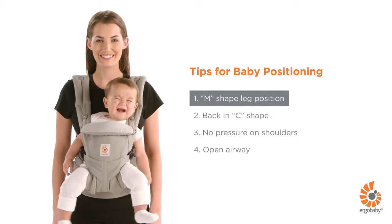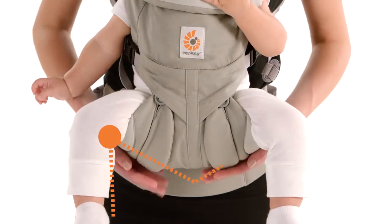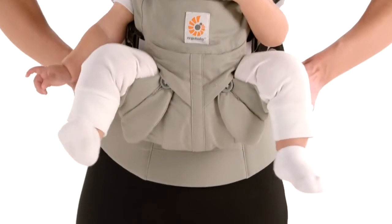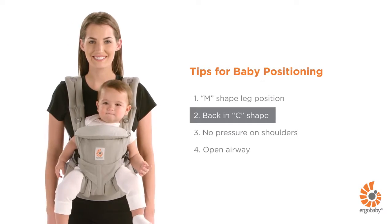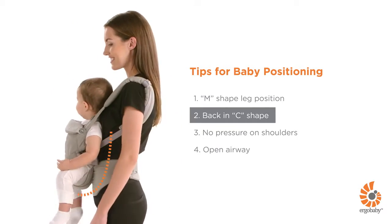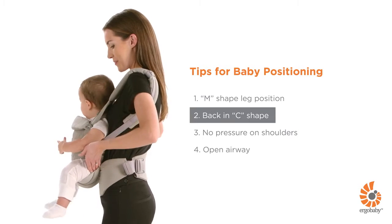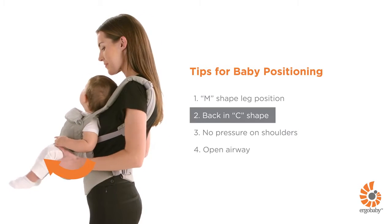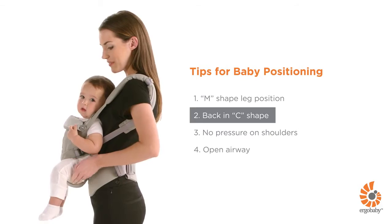Your baby's legs are in an ergonomic M-shaped position with back slightly rounded in a C-shape. Pivot your baby's pelvis forward and extend the seat under her thighs if needed.